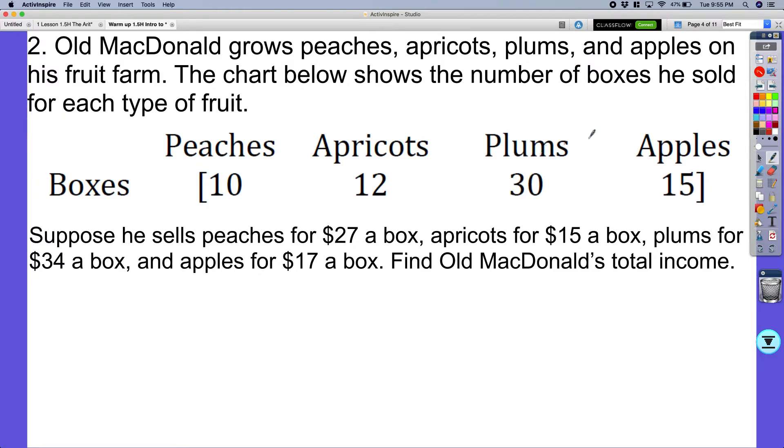Now if you remember, which we talked about earlier again, is we need to rewrite these matrices in a way where I have peaches, apricots, plums, apples, so the type of fruit on top. And that means the cost of fruit will be on the side.